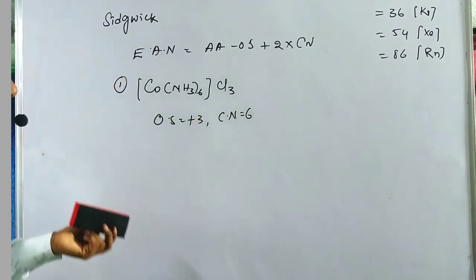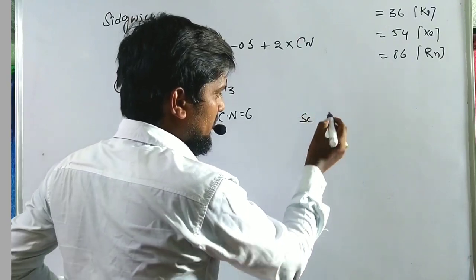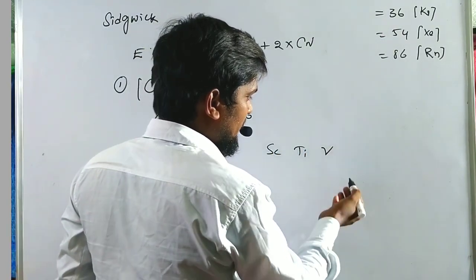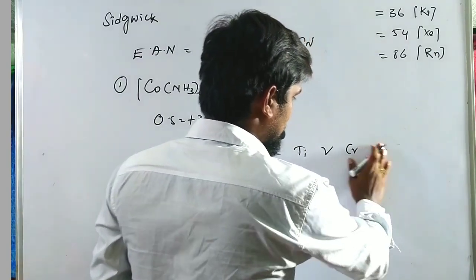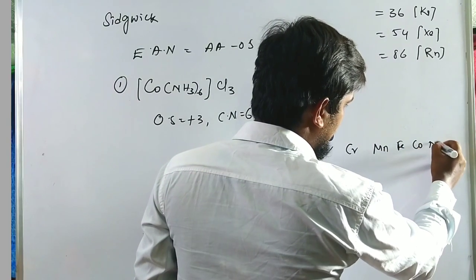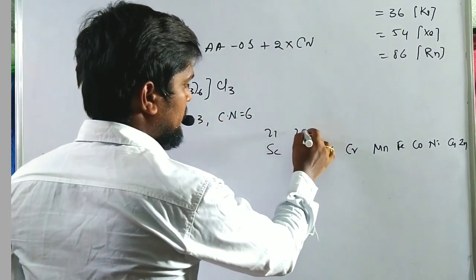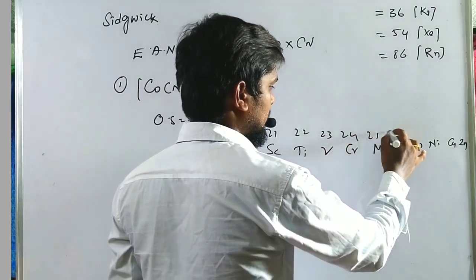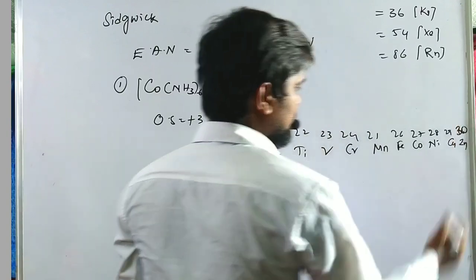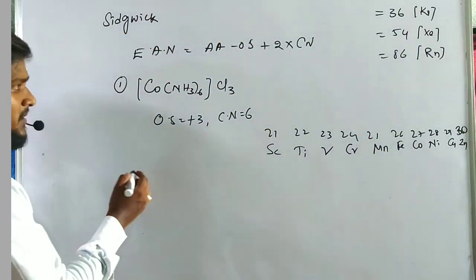To find cobalt's atomic number, we recall the first-row d-block elements: scandium (21), titanium (22), vanadium (23), chromium (24), manganese (25), iron (26), cobalt (27), nickel (28), copper (29), zinc (30). Therefore, the atomic number of cobalt is 27.